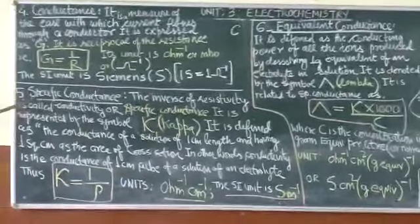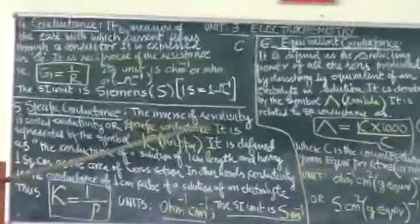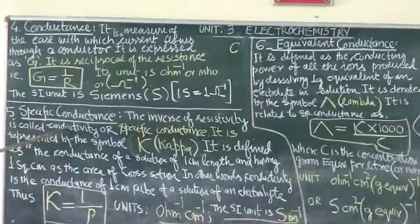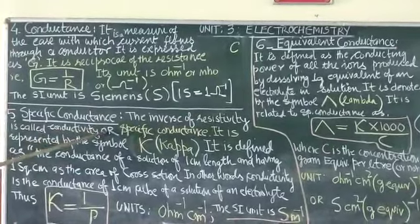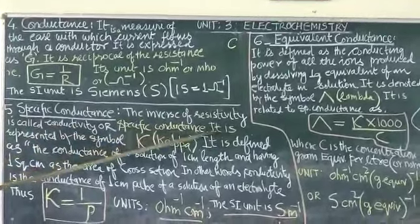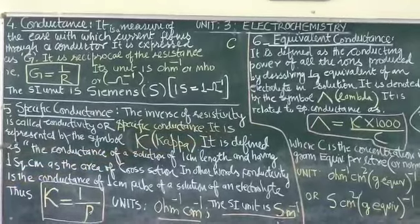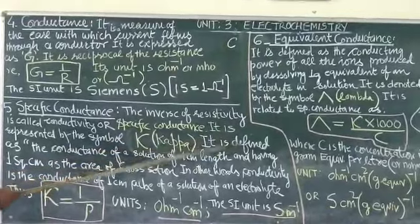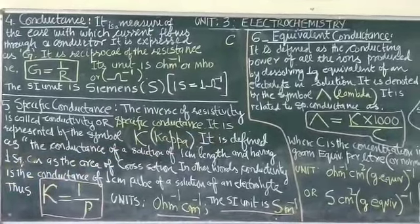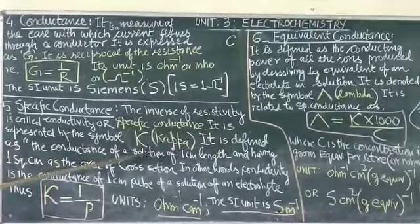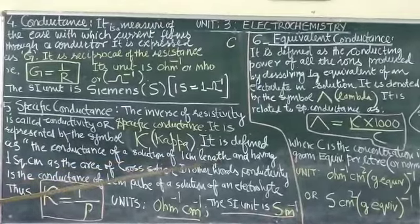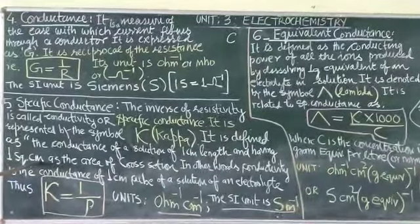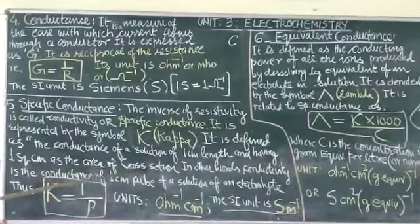Now coming to the next one, the fifth one, that is specific conductance. The inverse of resistivity is called conductivity or specific conductance. It is represented by the symbol kappa, Greek letter kappa. It is denoted as the conductance of a solution of one centimeter length and having one square centimeter as the area of cross-section.